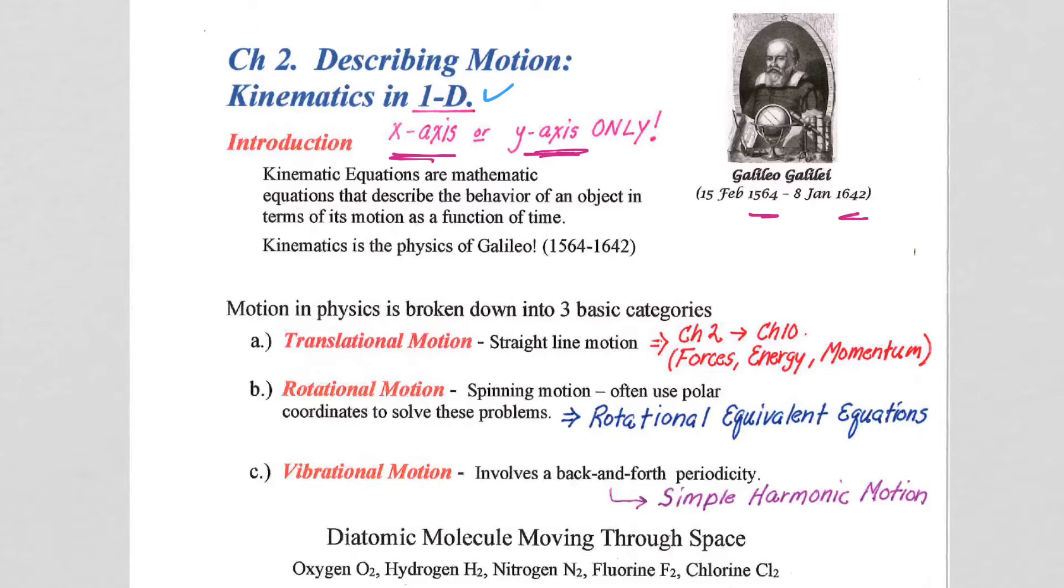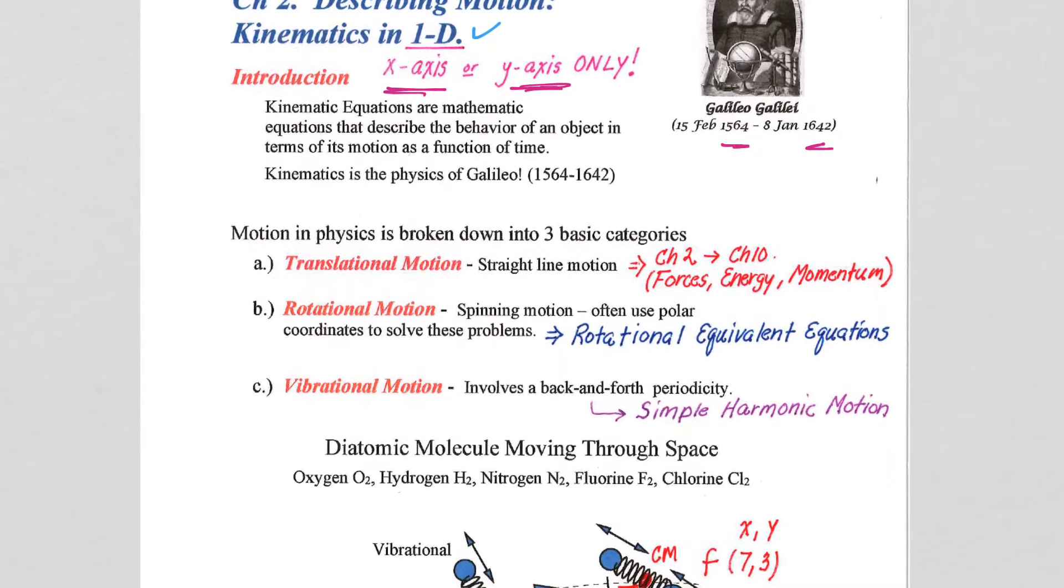So, we'll see that this course is broken down into basically three types of motion. A lot of the course, most of the course, is going to be spent with translational motion, that we have here, straight line motion. It'll become two-dimensional motion very quickly for us, after our chapter 2 unit here in kinematics of one dimension. But really, from this chapter, chapter 2, up through chapter 10,